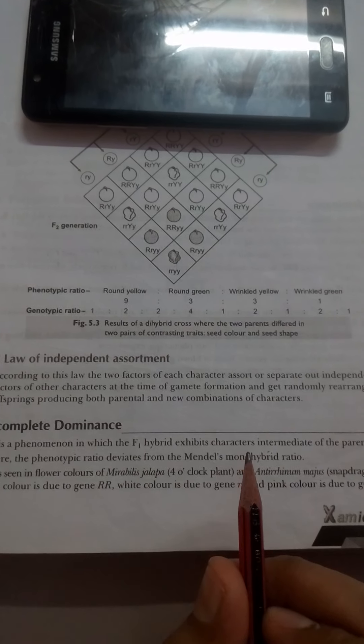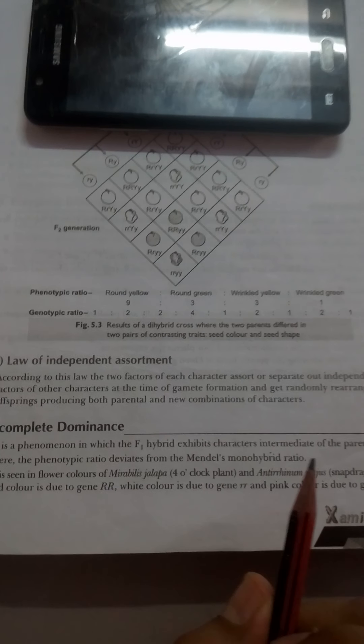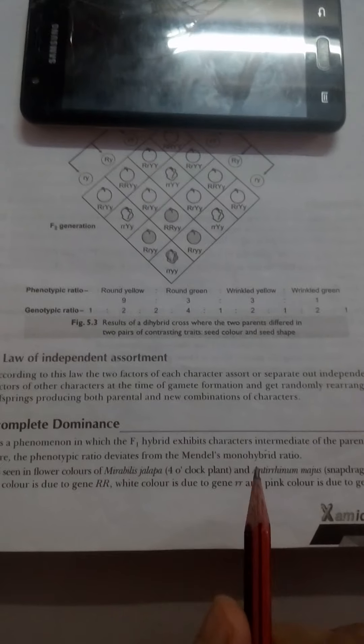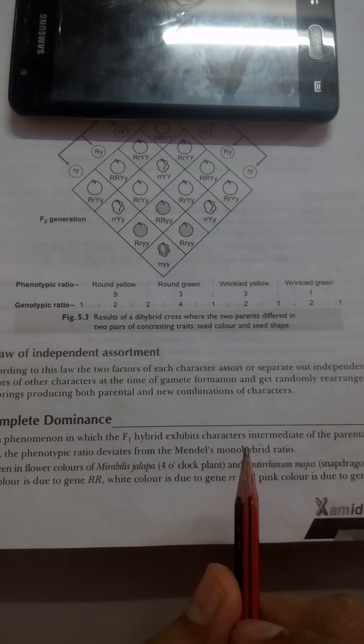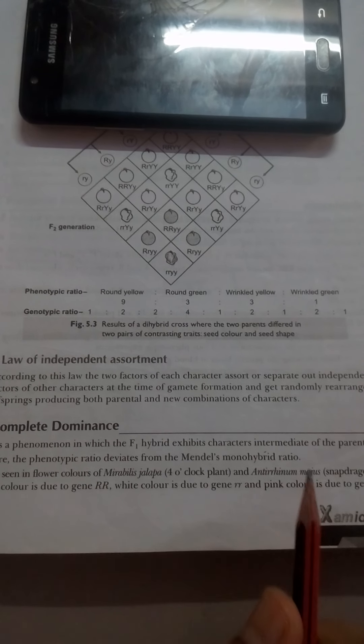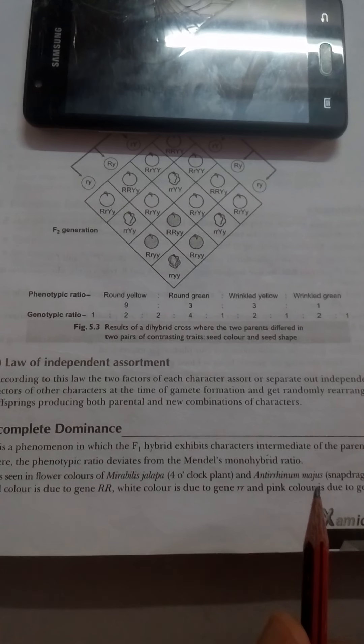Mendel got one of the two parental traits in the F1 generation. Here, intermediate is produced. Mendel got one is to two is to one as the genotypic ratio, and three is to one as the phenotypic ratio in the F2 generation.